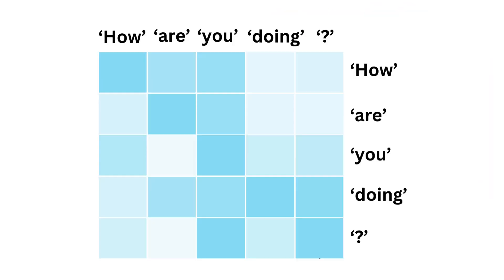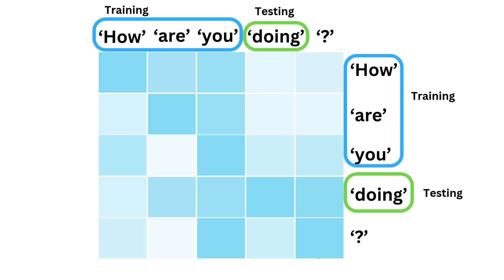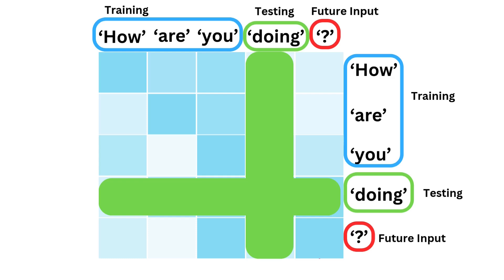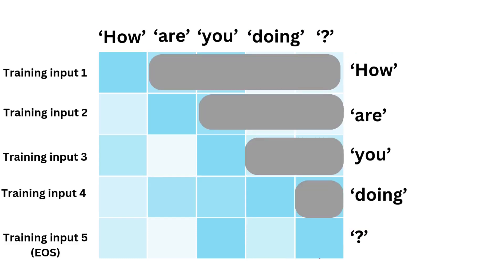However, there is an obvious issue with self-attention when used to pre-train a model. Usually during the pre-training phase, the model will use part of the input to predict another part of the input. To achieve that, you could mask the word to predict and feed that to the model. However, this doesn't work because the model will have access to future words in some instances to train itself, which isn't possible once deployed. In order to prevent information leakage from these future positions, masked self-attention is used.